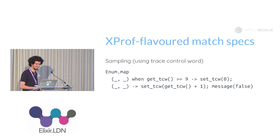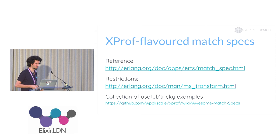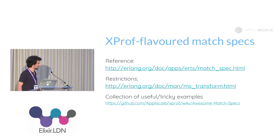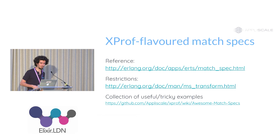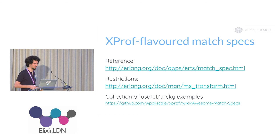That's very smart. If you want to dig into match specs, look at the Erlang reference manual to investigate what action functions are allowed. There are also some descriptions of body restrictions in the MS transform documentation. And we created a wiki page for useful match spec patterns that everybody can edit, hoping to gather tricky patterns others can use as well. Currently it only contains these examples shown, but hopefully it will grow.